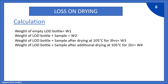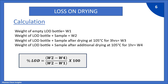Now let us see the calculation. Weight of empty LOD bottle is W1. Weight of LOD bottle plus sample is W2. Weight of LOD bottle plus sample after drying at 105 degree Celsius for 3 hours is W3. Weight of LOD bottle plus sample after additional drying at 105 degree Celsius for 1 hour to get constant weight is W4. The formula: Percentage LOD = (W2 − W4) / (W2 − W1) × 100. Here, (W2 − W4) / (W2 − W1) equals loss of sample divided by weight of sample.